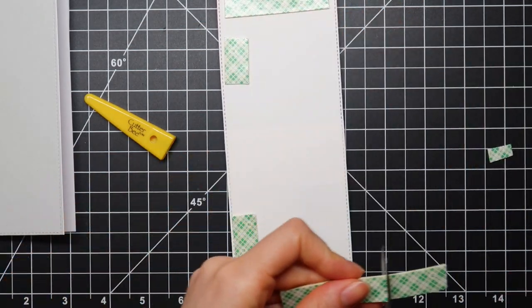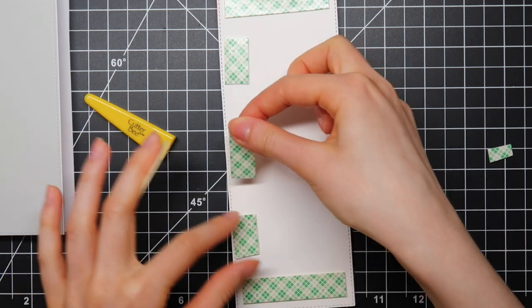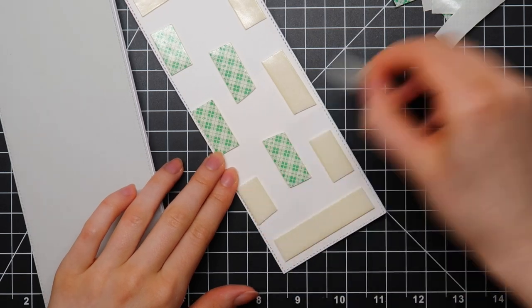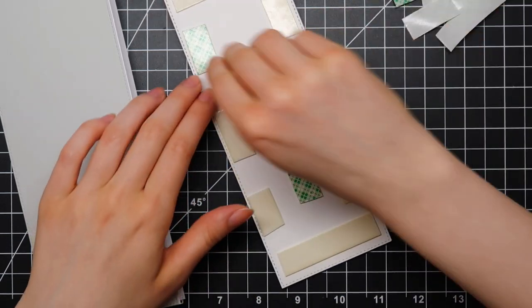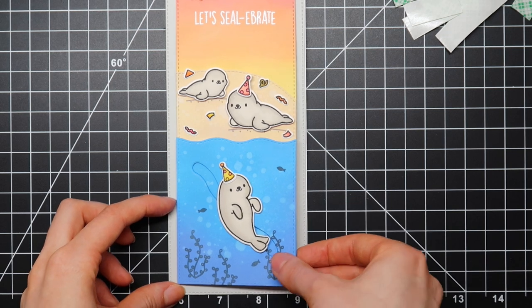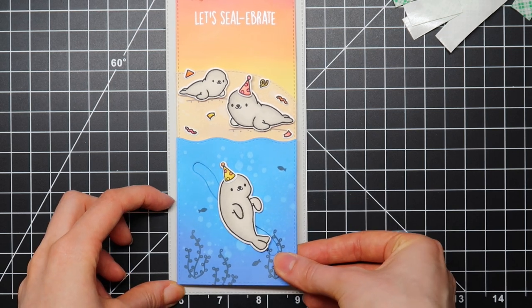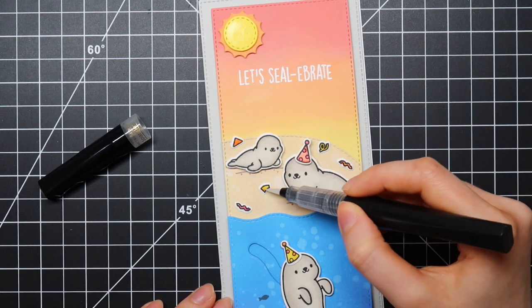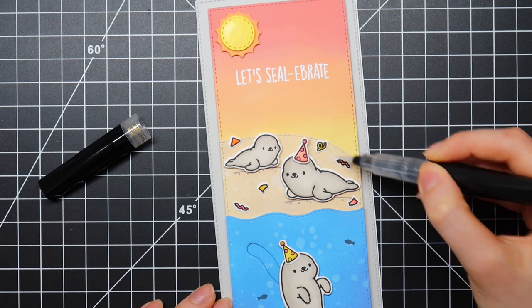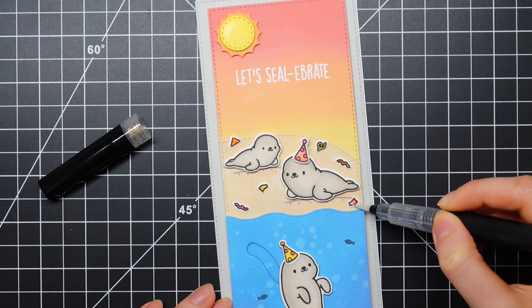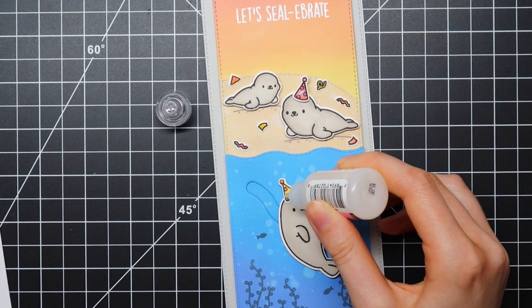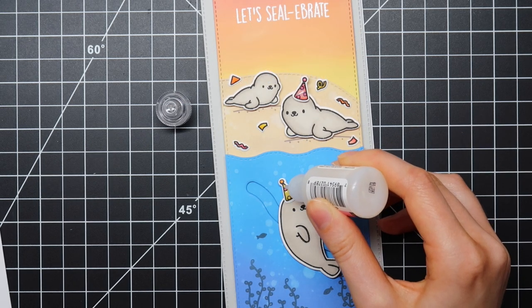I die cut the largest rectangle from the stitched slimline trio die cut set from Heffy Doodle using oyster shell colored cardstock from Heffy Doodle and I adhere that piece to a note card that I cut to 8.5 x 3.5 inch. To add some sparkle to this card I am going in with a crafters companion clear sparkle pen and of course I'm also adding a coat of glossy accents for extra shine and dimension.